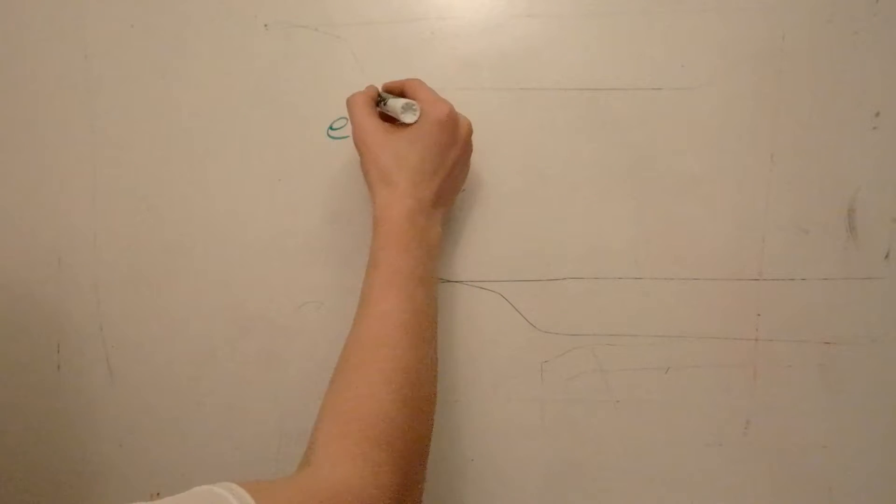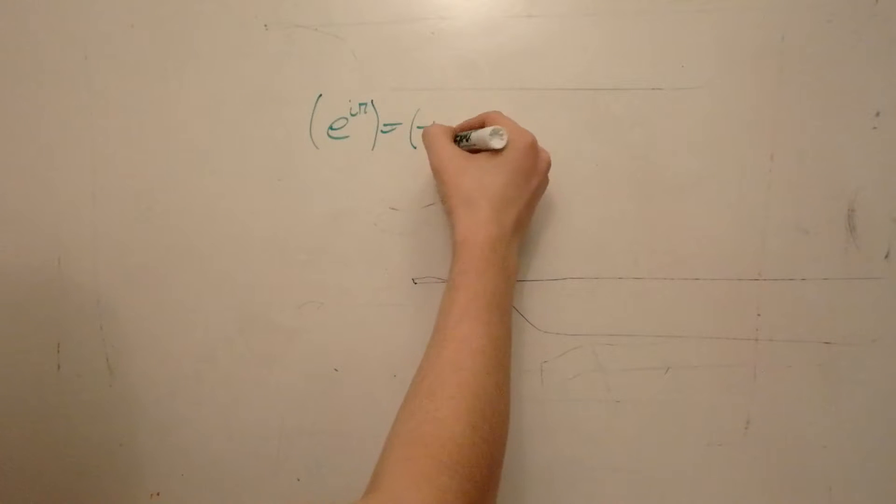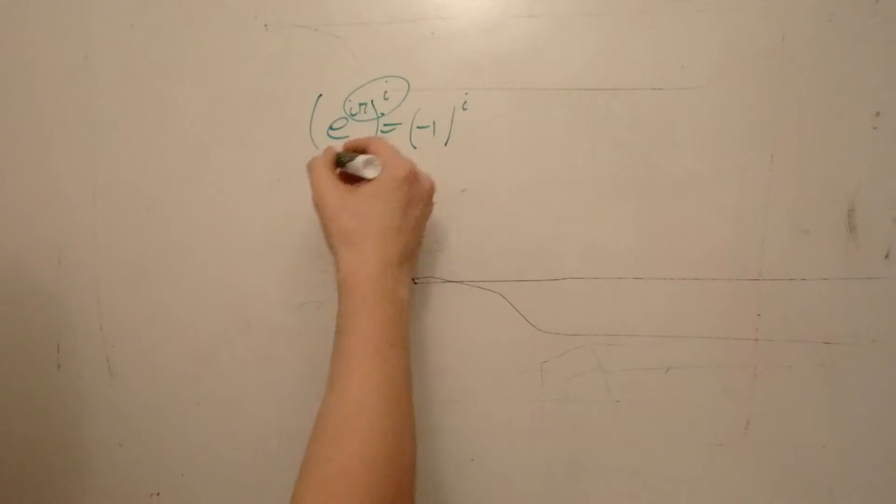At this point what we can do is we can just take both sides to the i power, and then we'll notice you can multiply powers together. This just gives us e to the minus pi equals minus one to the i power.